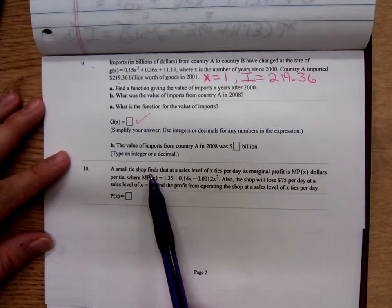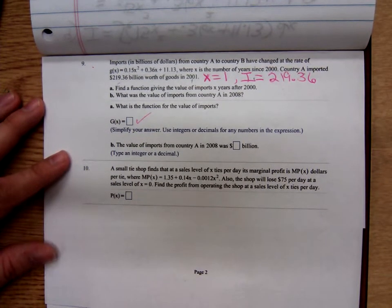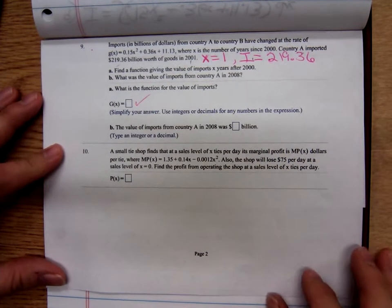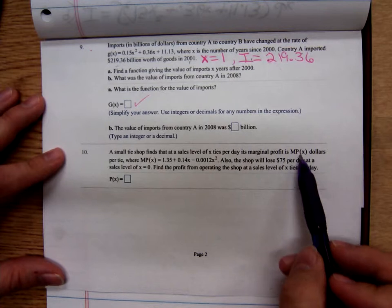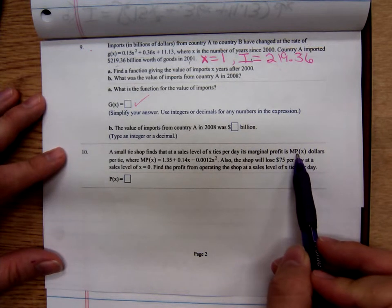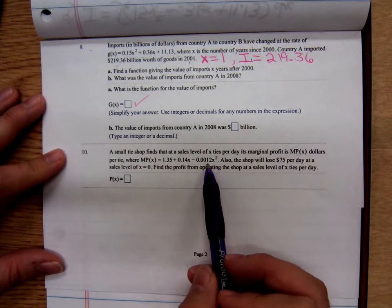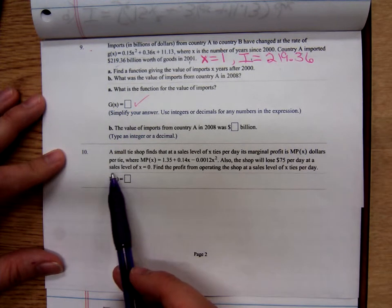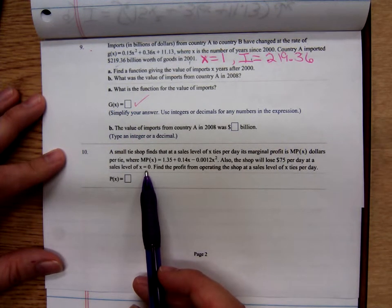A small tie shop finds that at a sales level of x ties per day, its marginal profit, they're giving you the marginal profit. The marginal profit is the derivative, so they're giving you the derivative. Here's the derivative. Also, they know that the shop will lose $75 per day at a sales level of zero. So if they don't sell anything, they're going to have a loss of $75.